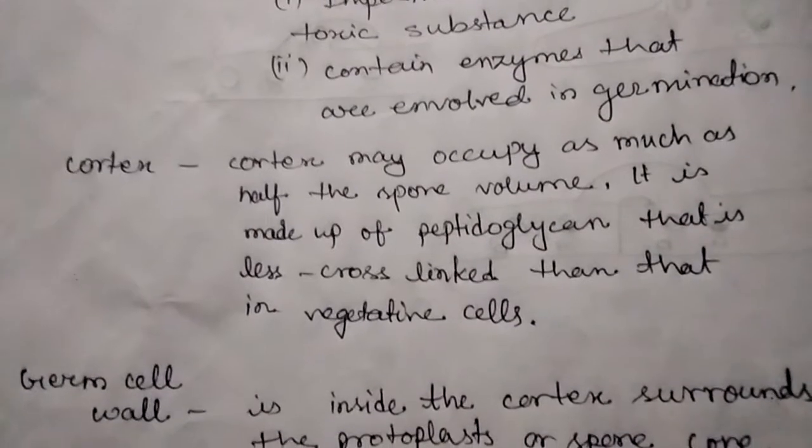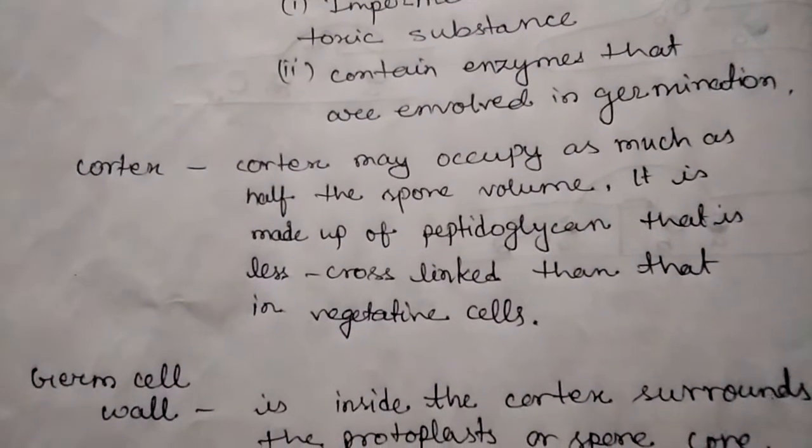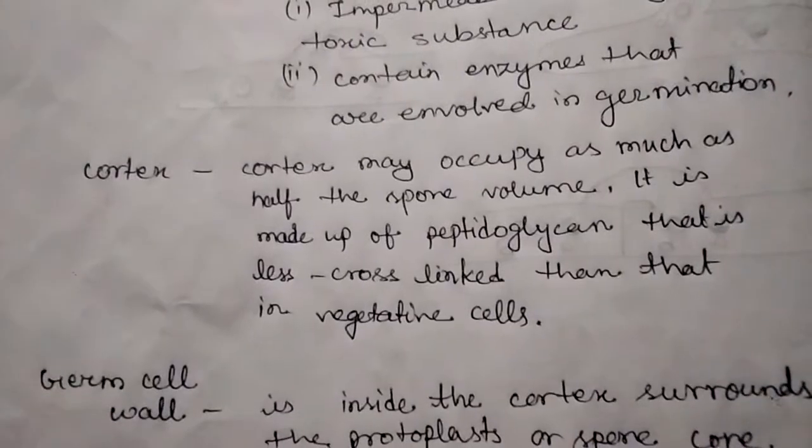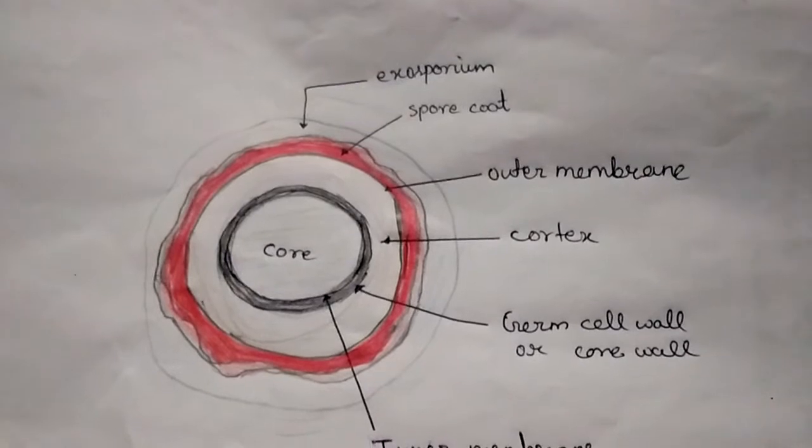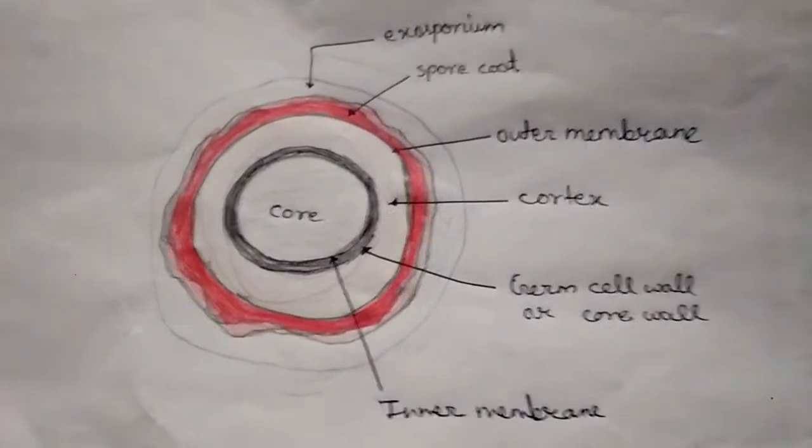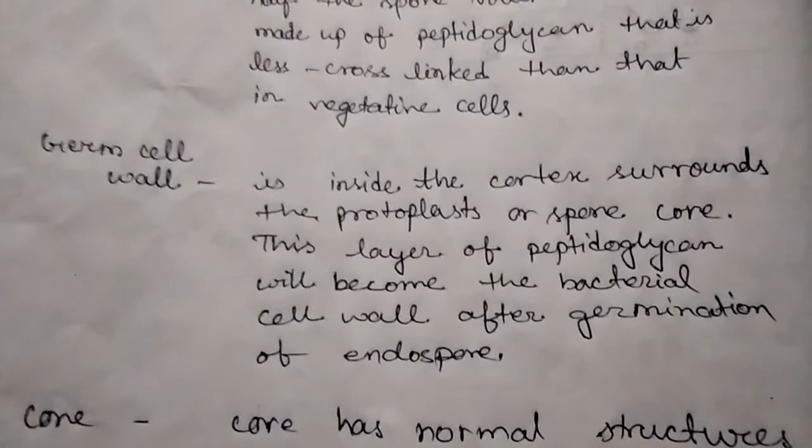Beneath the thick layer of cortex there is a germ cell wall. This germ cell wall surrounds the protoplast or spore core.